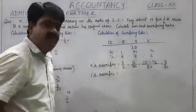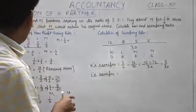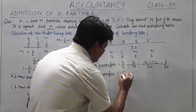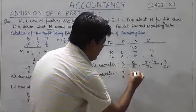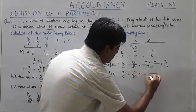L's sacrifice, again same formula will be applicable, that is old minus new: 2/6 minus 8/30. L's LCM will be 30. 6 fives are 30, so 10 minus 8, that is 2/30. Then we will calculate M's sacrifice.